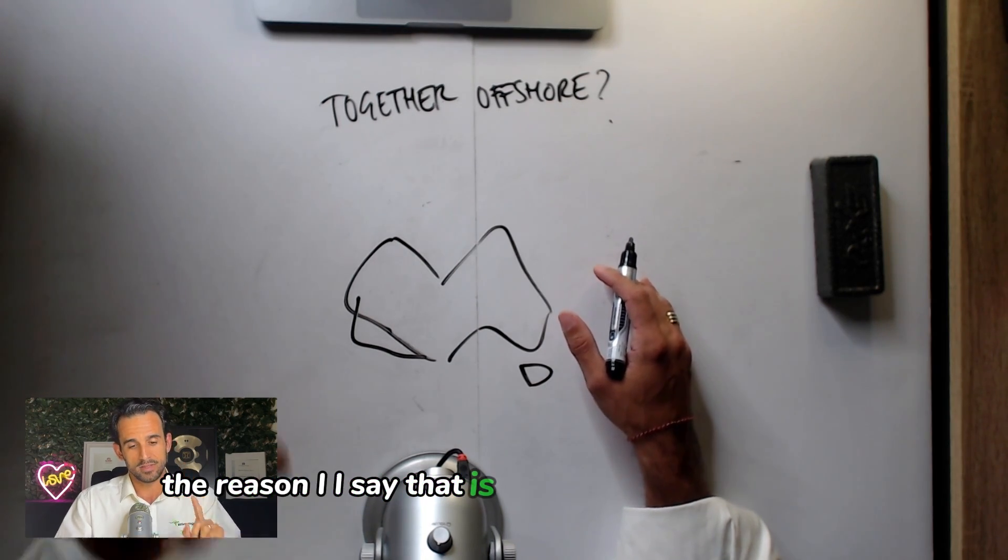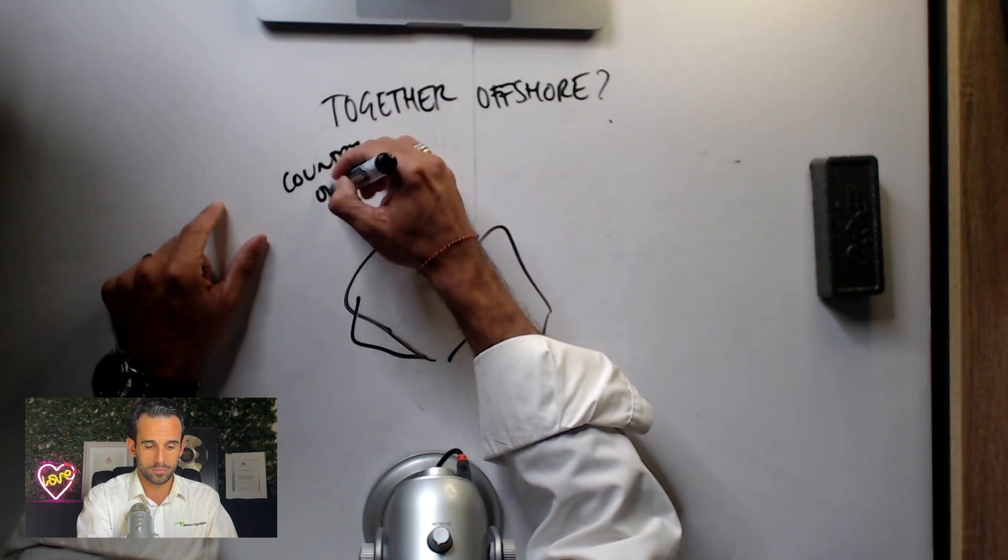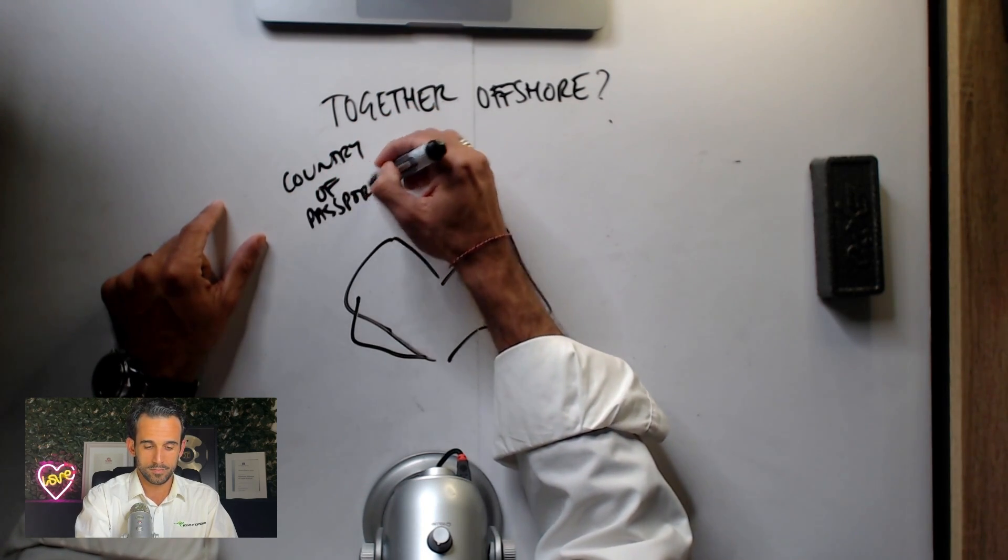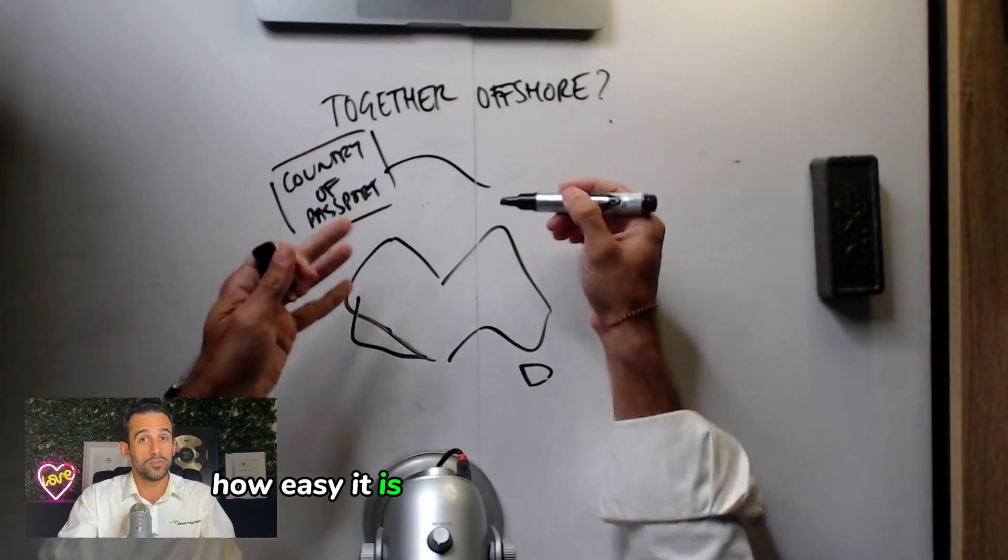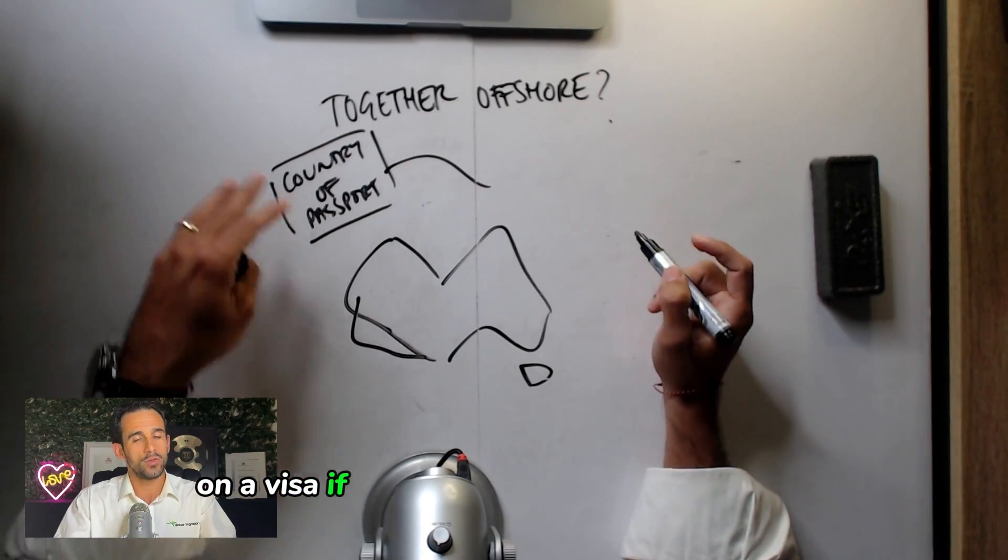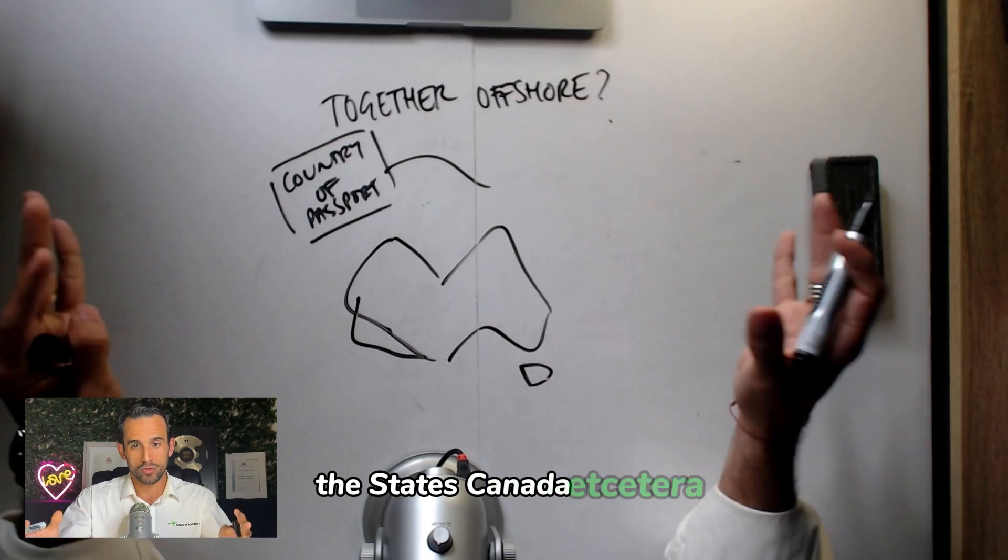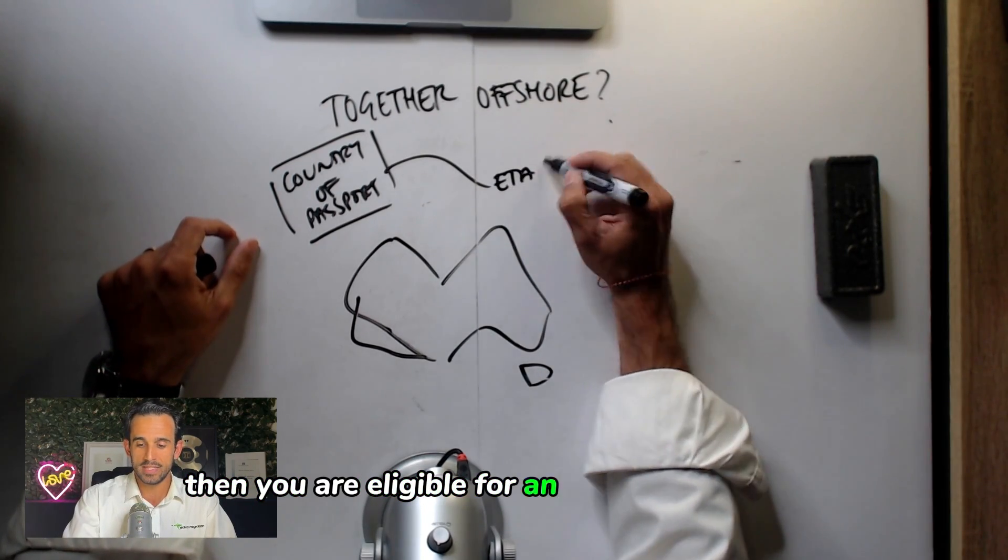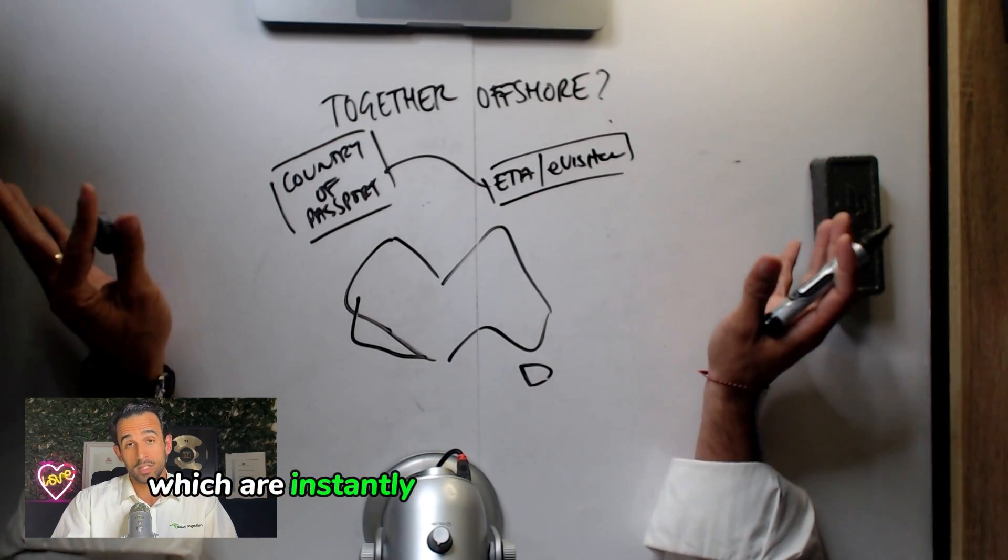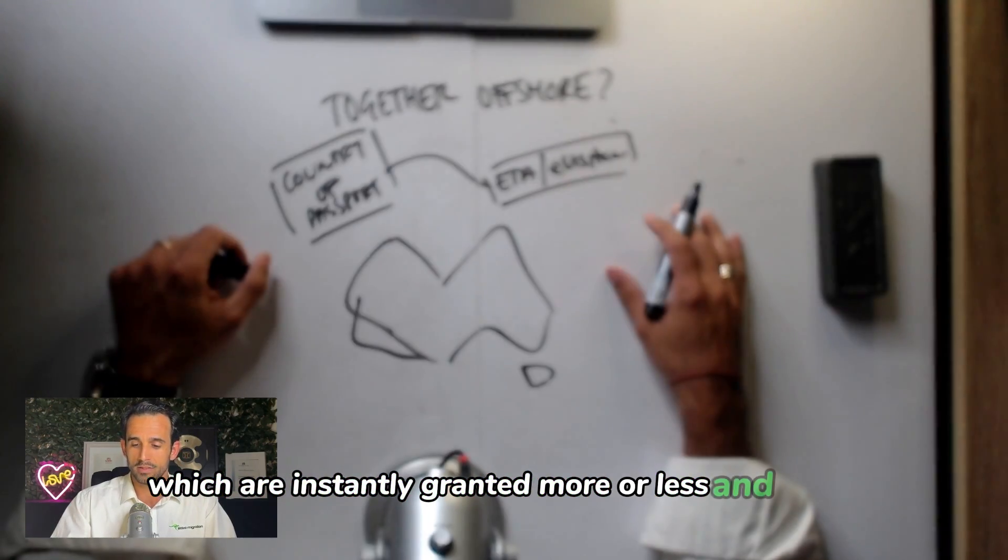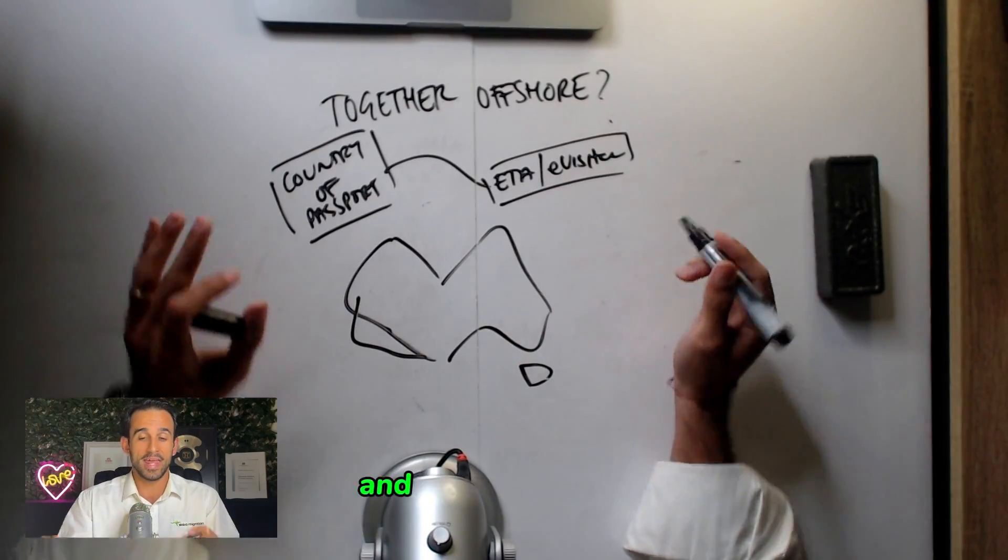The reason I say that is your country of passport pretty much dictates how easy it is for you to get into Australia on a visa. If you hold a passport from Europe, the States, Canada, etc., then you are eligible for an ETA or an e-visitor visa, which are instantly granted more or less and cheap if not free. These are multiple entry 12-month valid visas and they are a way in.